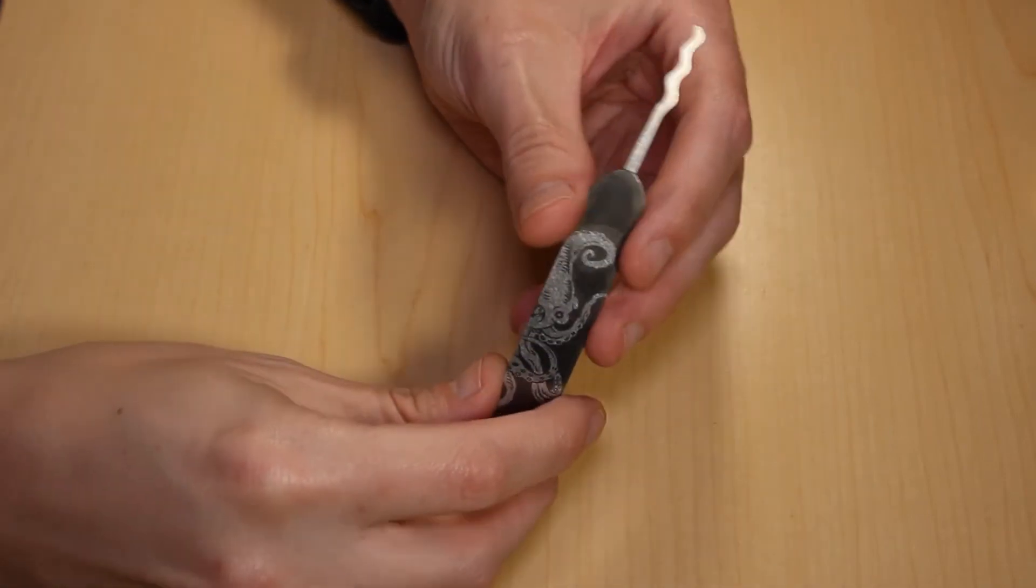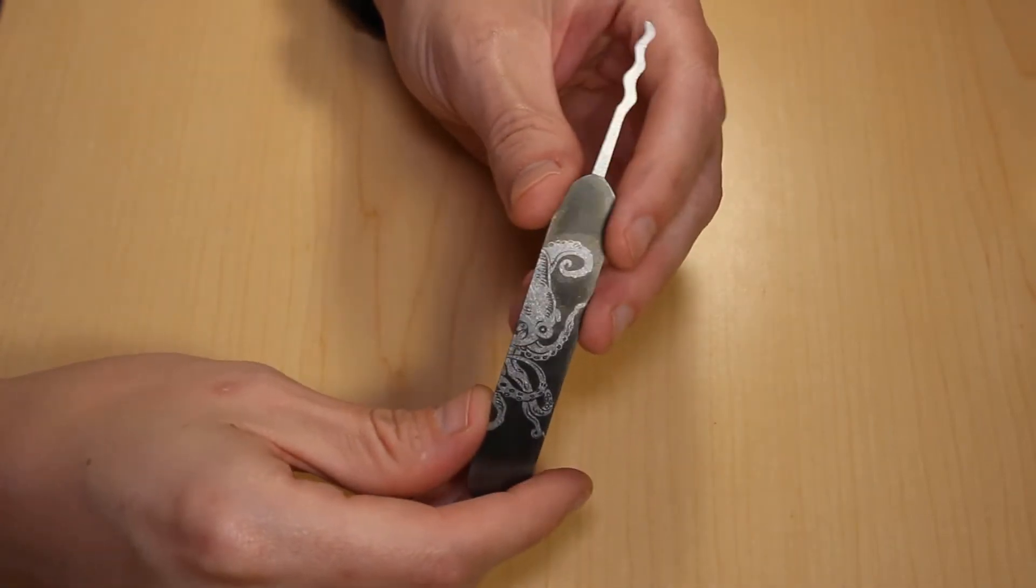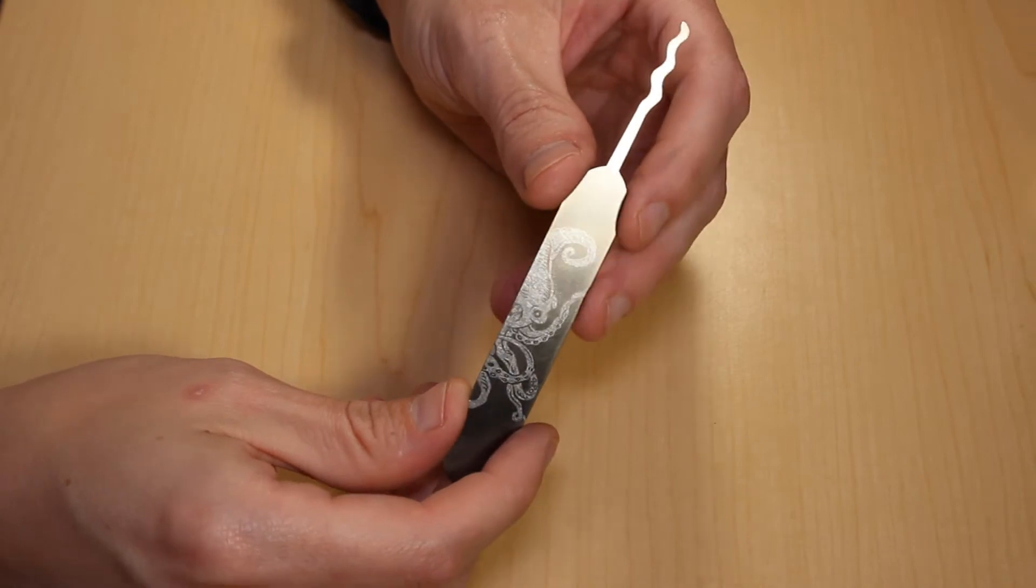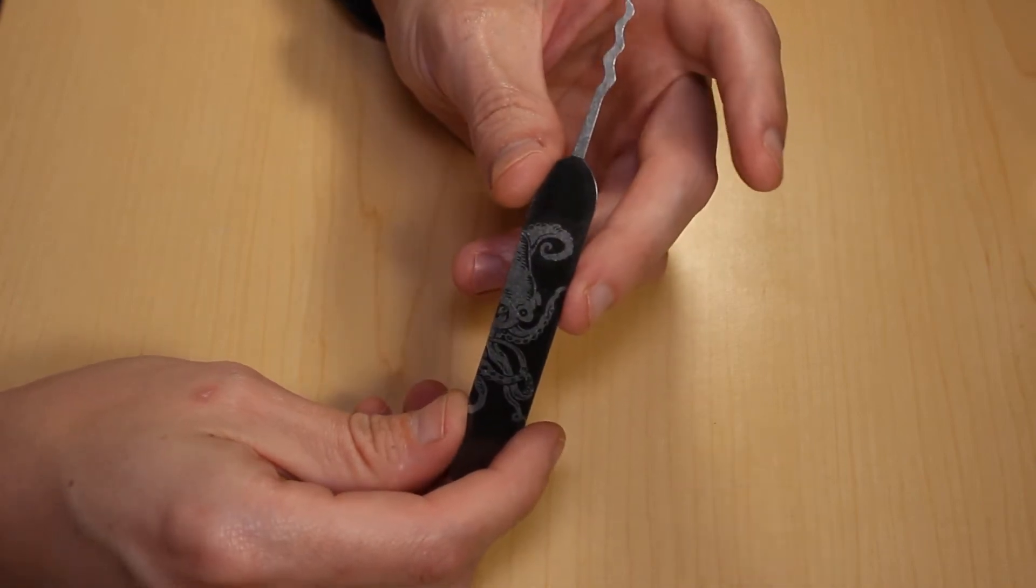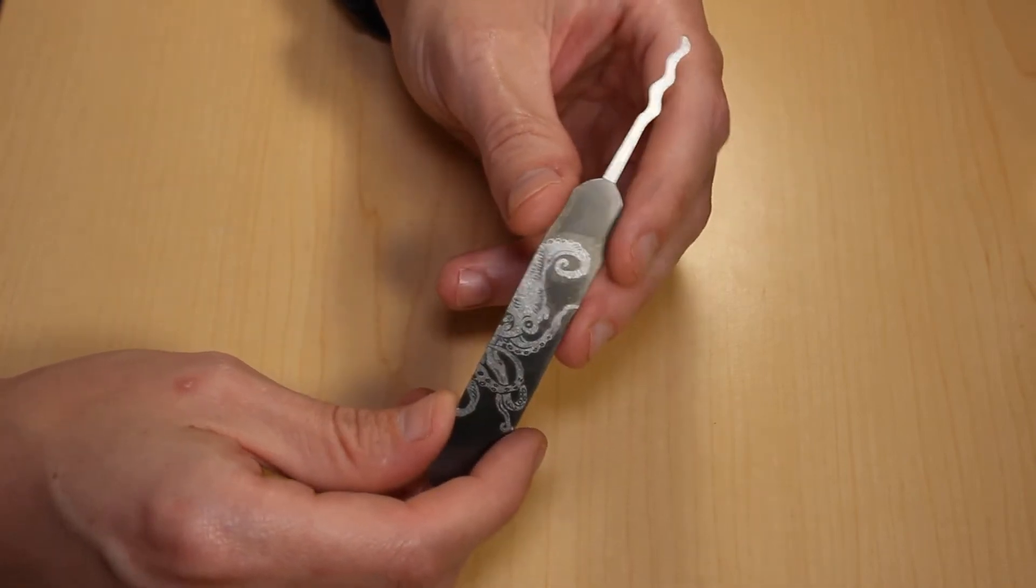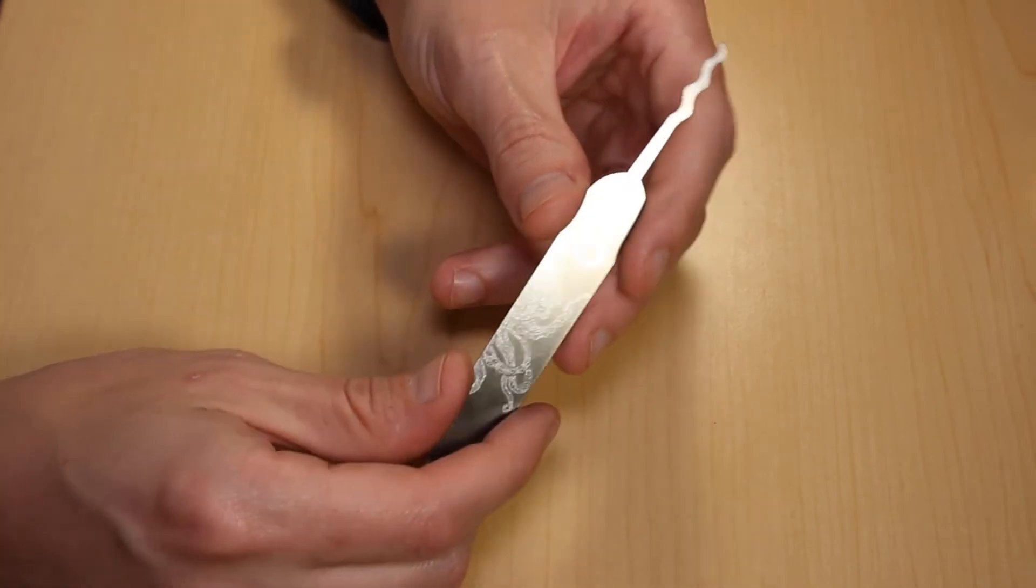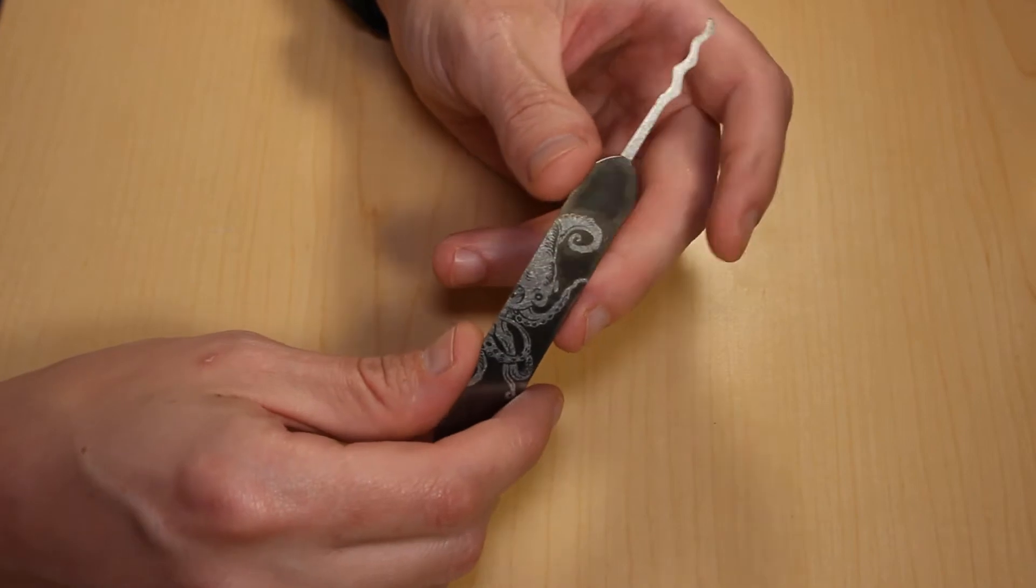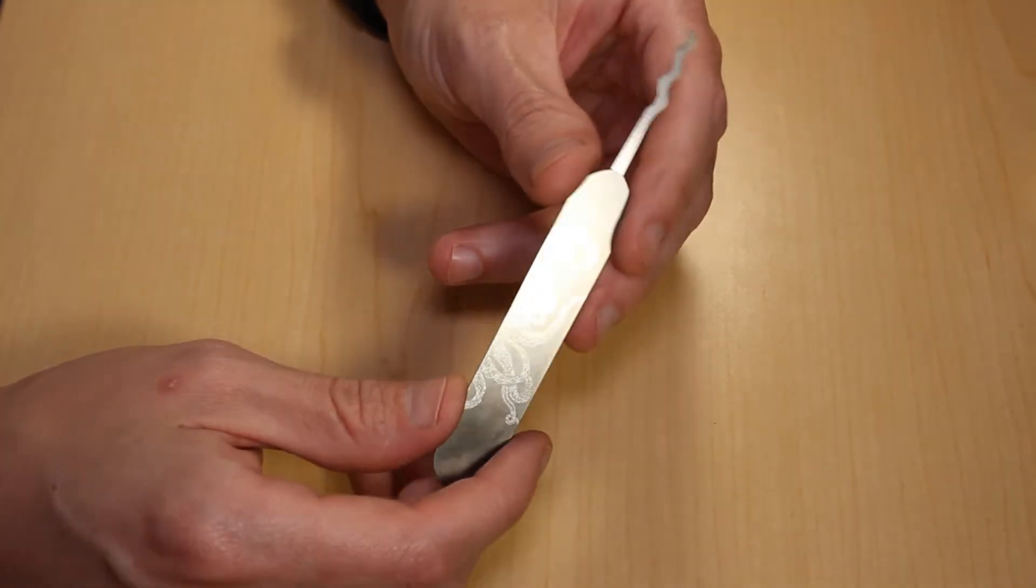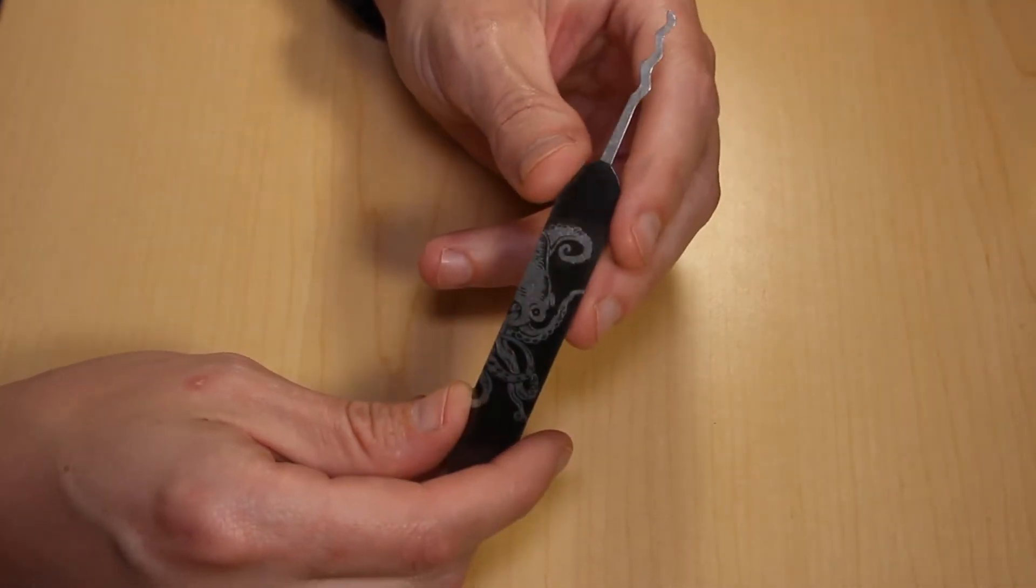What's going on guys? Today I want to talk about the Sparrows Octo-Rake. The Octo-Rake from Sparrows is a single rake that you can purchase on the Sparrows website. You can buy it by itself or add it in to another order that you're putting together and it's only five bucks US.